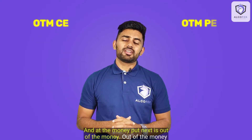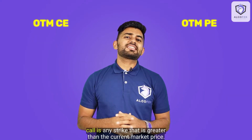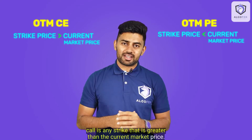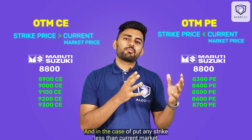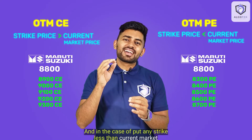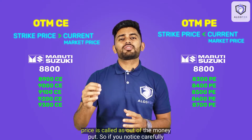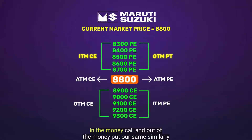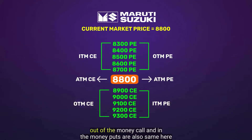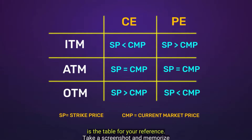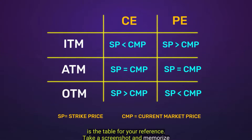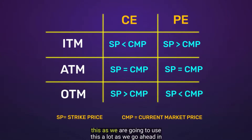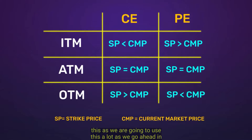Next is out of the money. An out of the money call is any strike that is greater than the current market price. For puts, any strike less than the current market price is called an out of the money put. If you notice carefully, in the money call and out of the money put refer to the same strikes, and similarly out of the money call and in the money put are also the same. Here is a table for your reference — take a screenshot and memorize this as we are going to use it a lot going ahead.